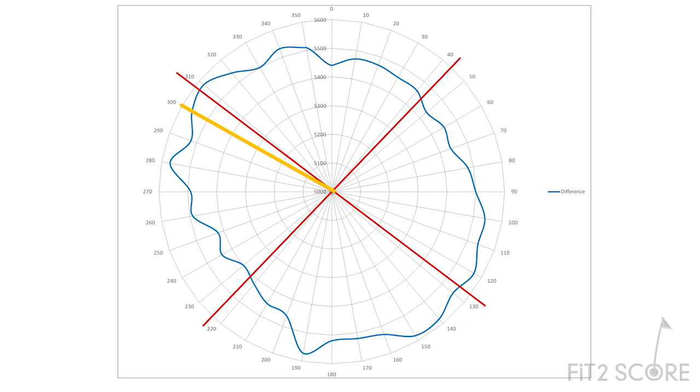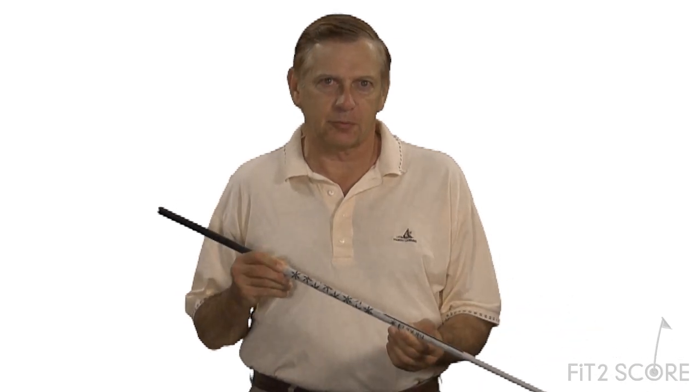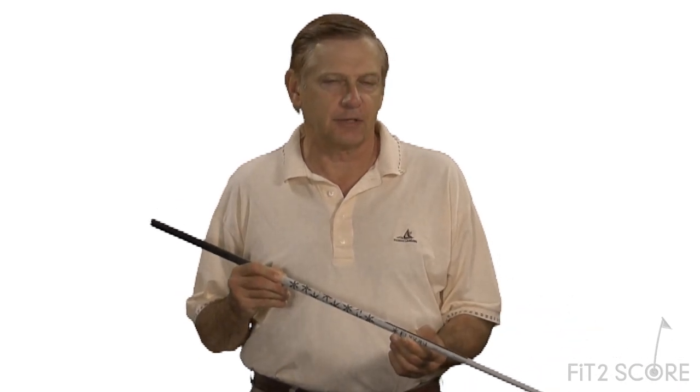Let's add orange lines to the shaft we just measured to show the spine finder result. Notice how it is not aligned with either the strong or weak planes. On this shaft, the bow is close to the actual spine, but not exactly on either of the planes. The difference varies from shaft to shaft.